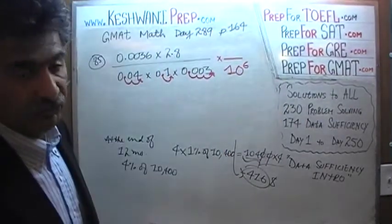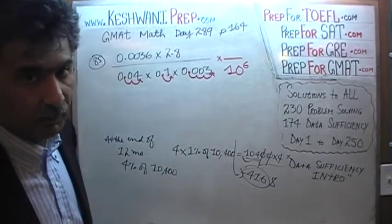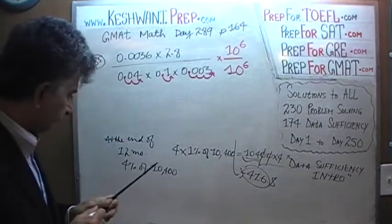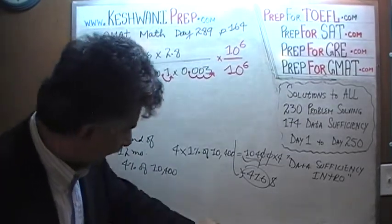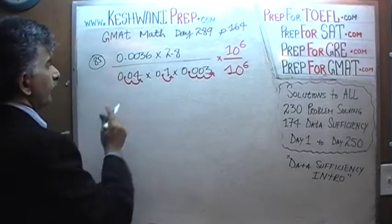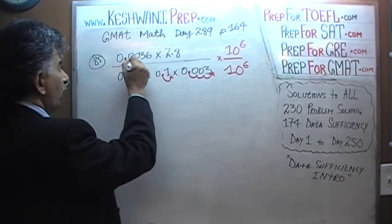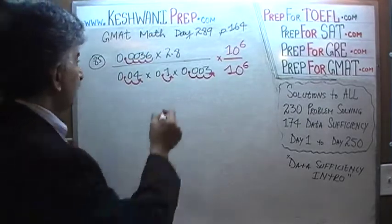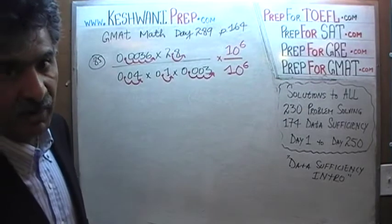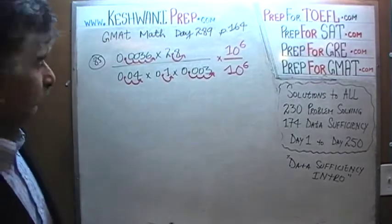If we multiply top and bottom by the same number we are essentially multiplying by 1. On the top, 0.0036 needs to be multiplied by 10 to the 4, and 0.28 by 10 to the 1 — that's 10 to the 5 — so there is an extra factor of 10 left over on top from our 10 to the 6, which just sits there.